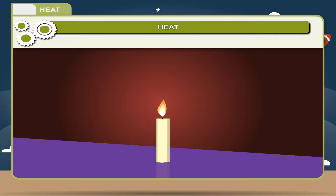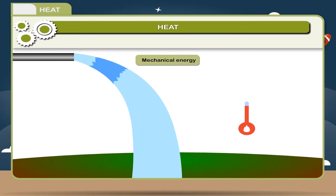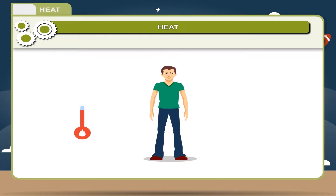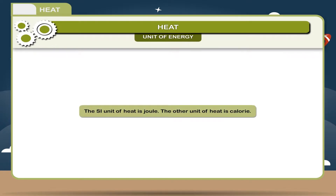Activity: when a candle burns, the chemical energy is converted into heat energy. When water falls from a great height to the earth, its temperature increases, hence the mechanical energy is converted into heat energy. When a body is heated its energy increases and when it is cooled its energy decreases.